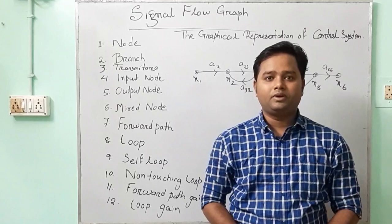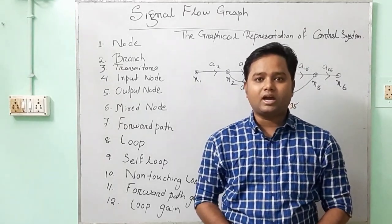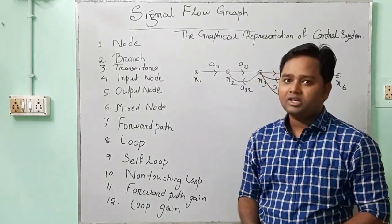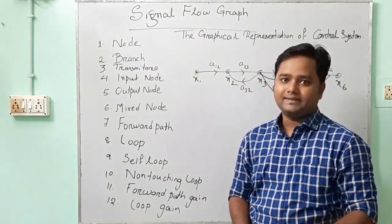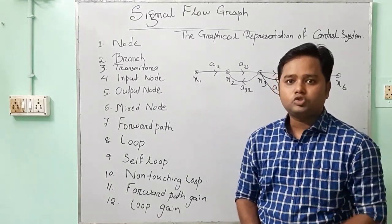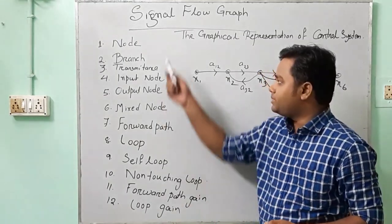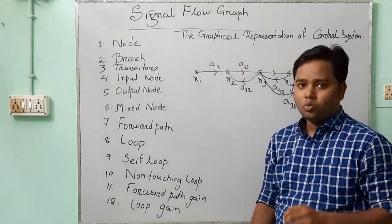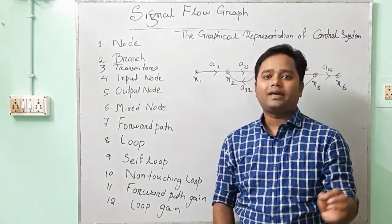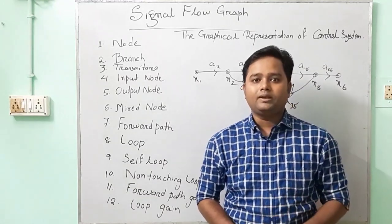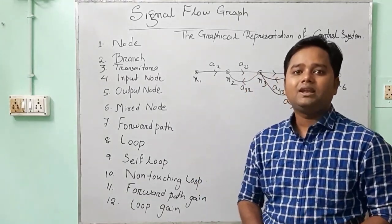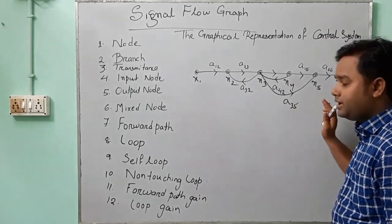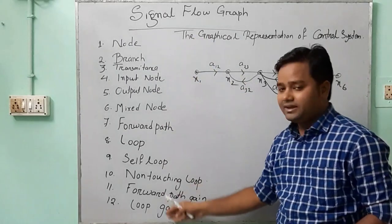Welcome to the 7th lecture of TS classes. In this lecture, we will study about the signal flow graph. As we discussed in the previous class, in block diagram reduction technique, there were specific terms: block, summing point, and take-off point. Similarly, in signal flow graph, we will study some basic terms. The signal flow graph is a graphical representation of a control system. This is an example of a signal flow graph, and some related terms are given here.